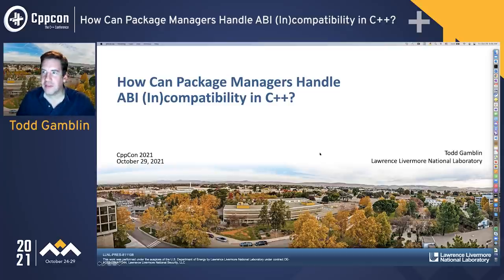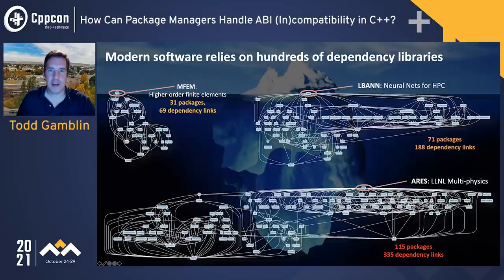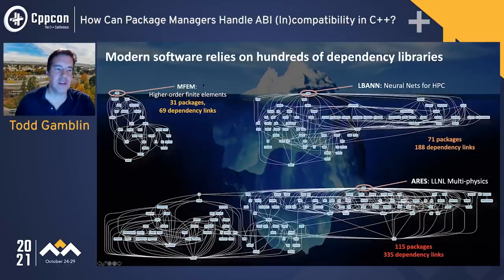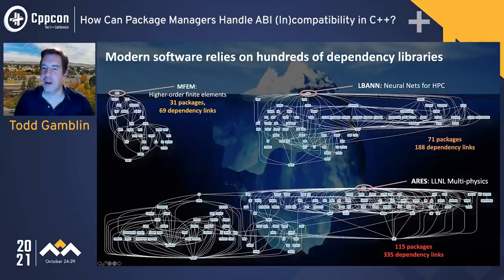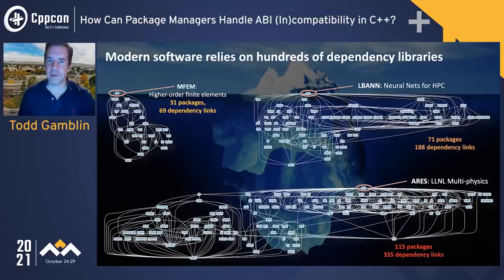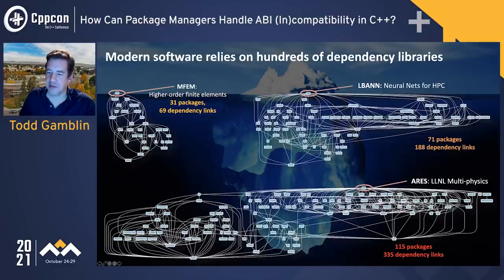The motivation is that modern software relies on hundreds of dependency libraries. If you look at some of the codes we develop at the lab, even a small package like the finite element framework MFEM has 31 different packages with 69 different dependencies. It just gets bigger from there. We have machine learning frameworks — one called LBAN has 71 packages and 188 dependencies.